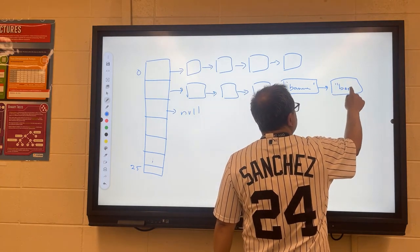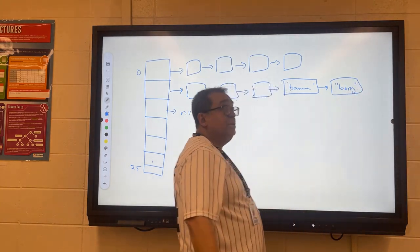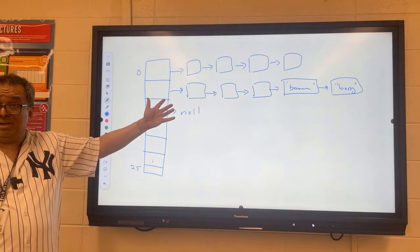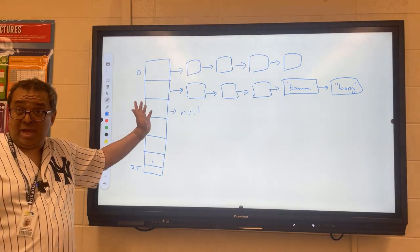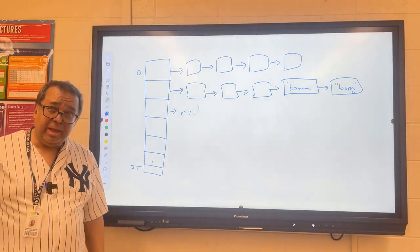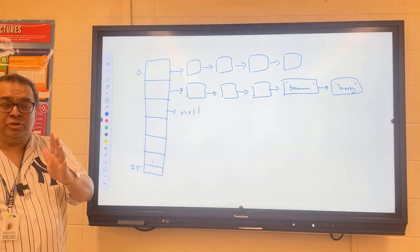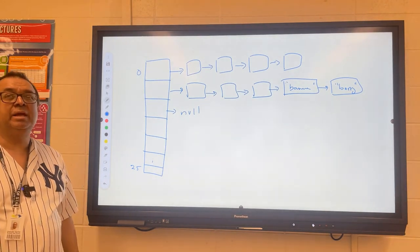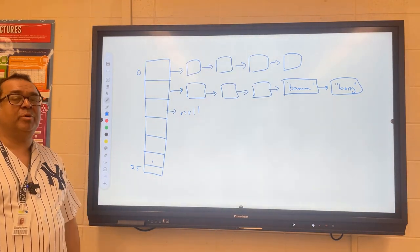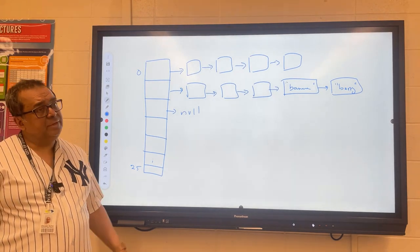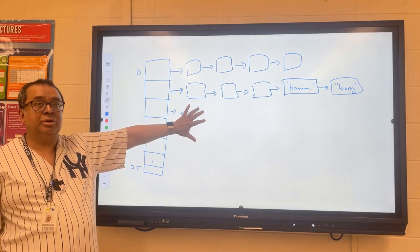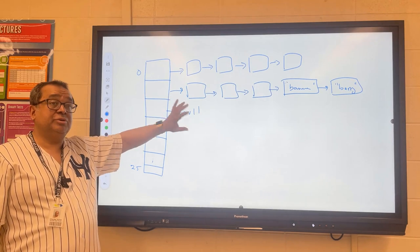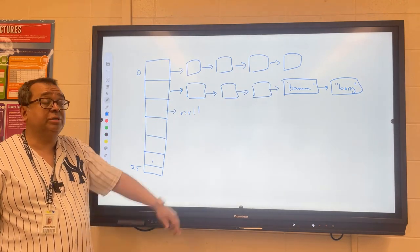I think you will agree with me that collision resolution is much easier here because really there aren't any collisions. We just add it to the end of a list. Now to see if you really understood what I've been talking about so far today, I need you to spend a couple of minutes with your partner to talk about the downside of this approach versus the other approach. This, by the way, is also sometimes called separate chaining.